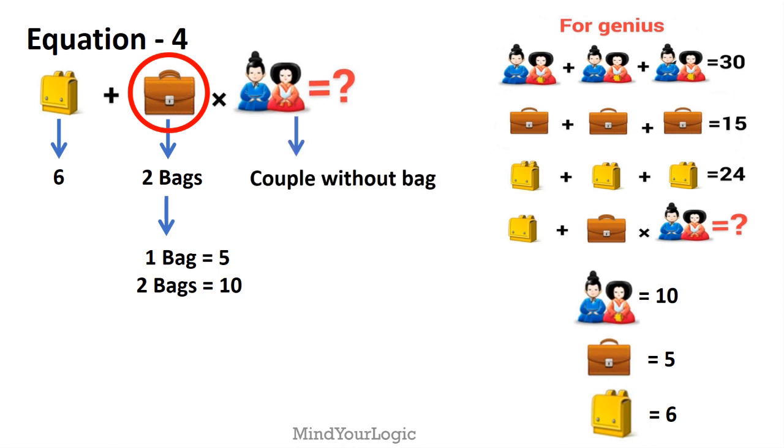Now the couple is without the yellow bag, so the couple is 10. The bag is 6, so 10 minus 6 equals 4.